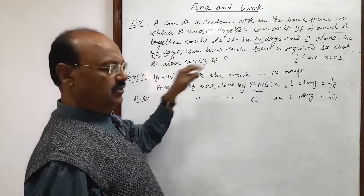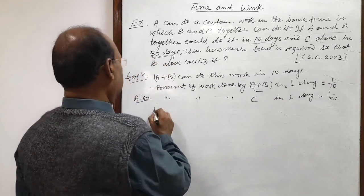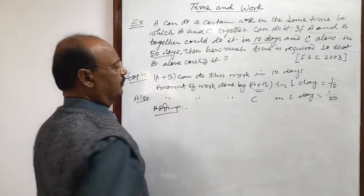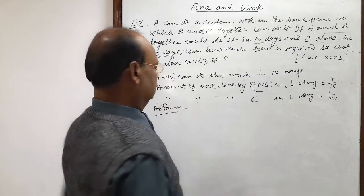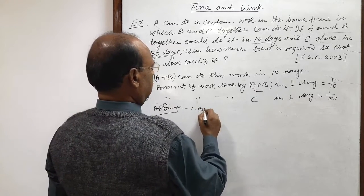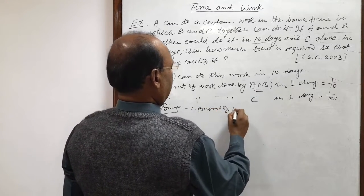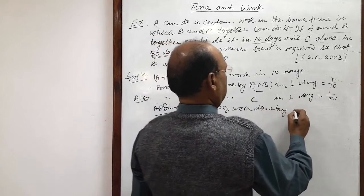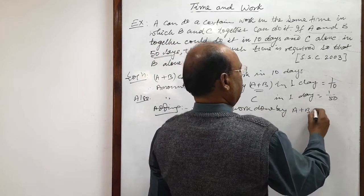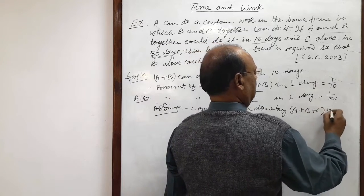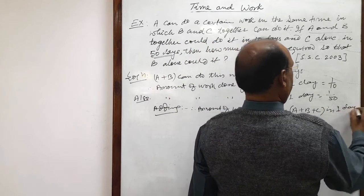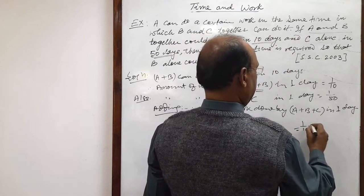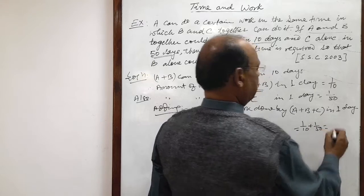So in 1 day work, 1 by 50, and adding these two relations. Therefore, amount of work done by A plus B plus C in 1 day will be how much? We will add these two numbers: 1 by 10 plus 1 by 50. Let us simplify it.